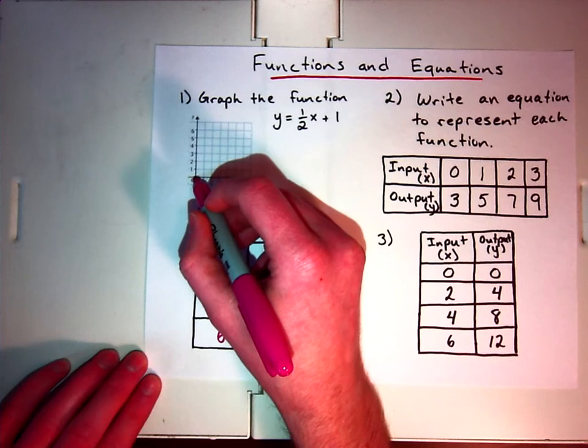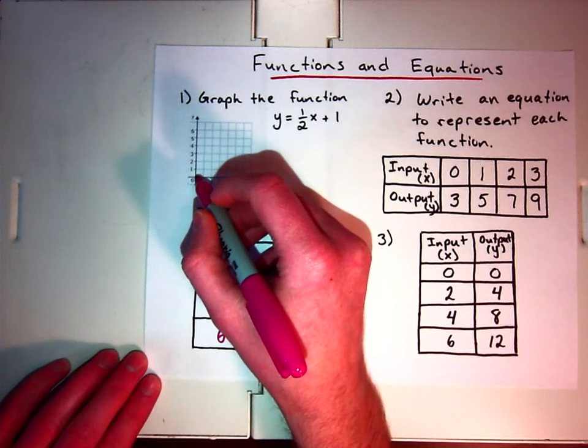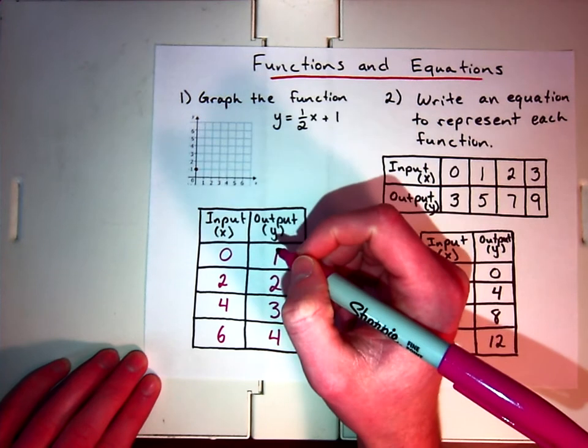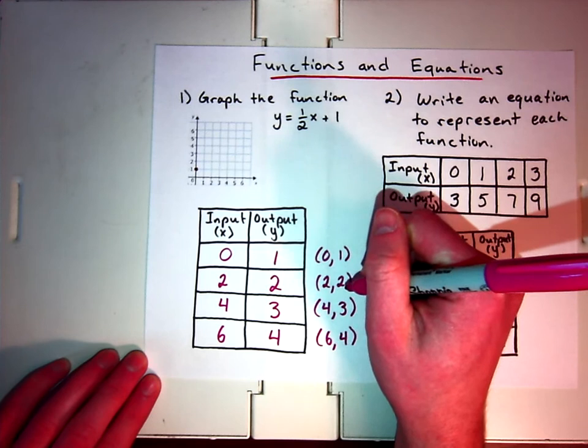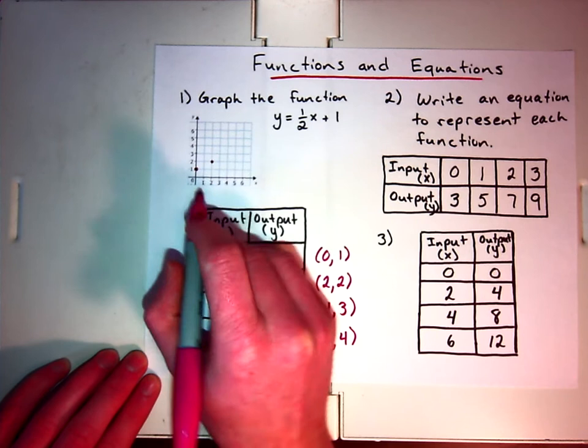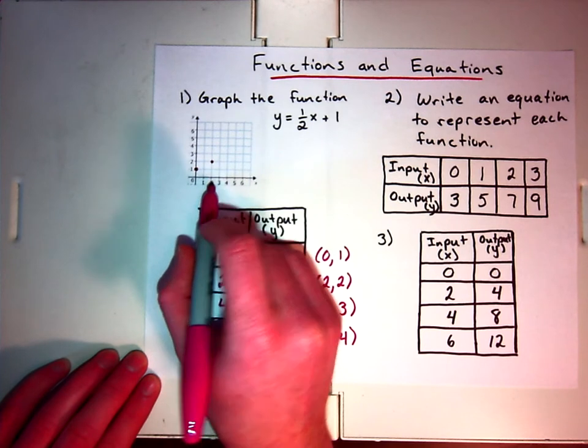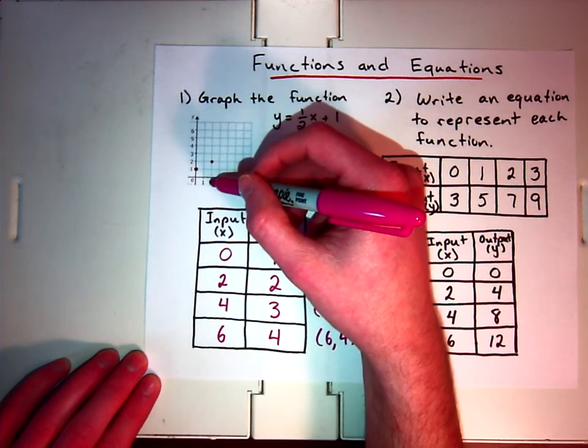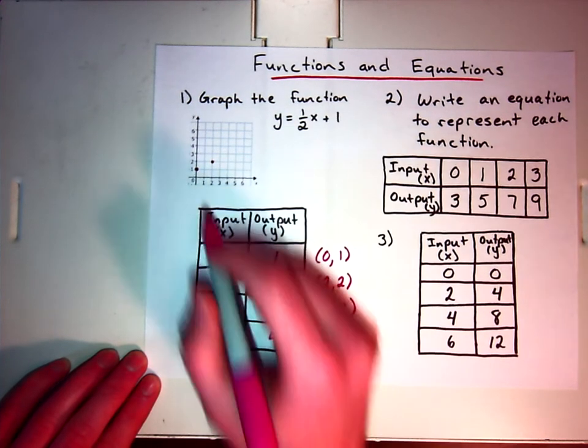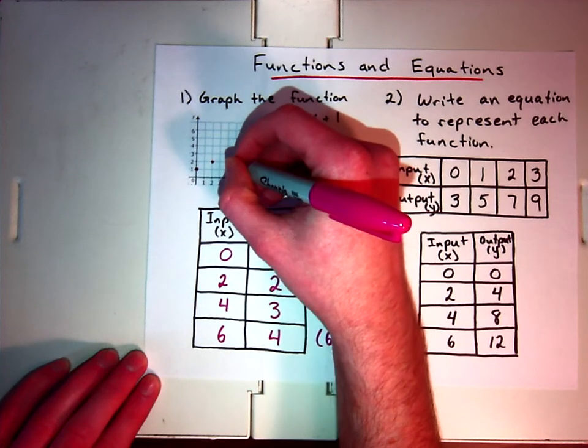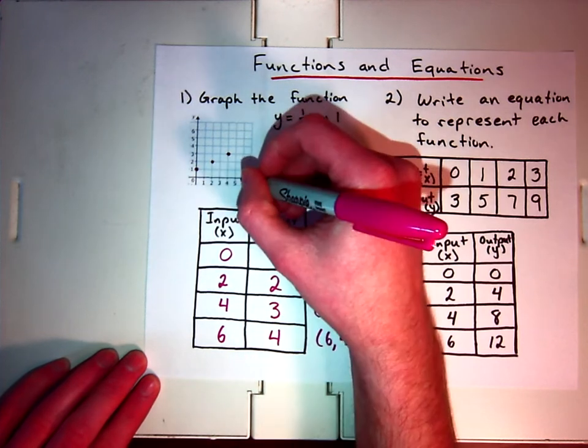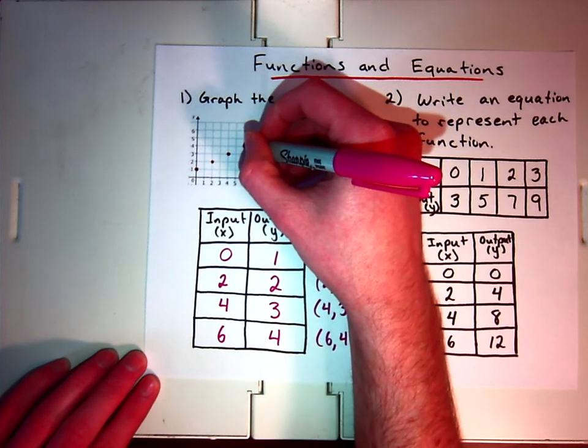So when x is 0, so we don't move right or left any, y is 1. So we put a dot on the coordinate plane. When x is 2, y is 2. So I count over 1, 2, and then up 1, 2. Remember, x is, you go to the right or left, and then y, you go up or down. For 4, when x is 4, y is 3. So 1, 2, 3. And then when x is 6, so 6 is here, y is 4. 1, 2, 3, 4.